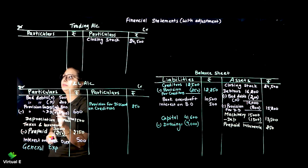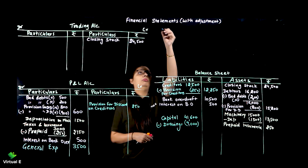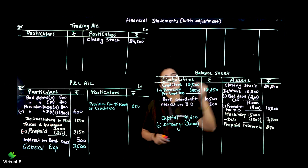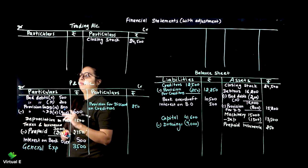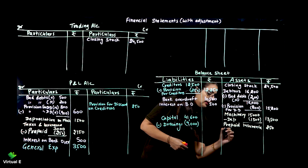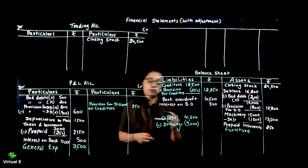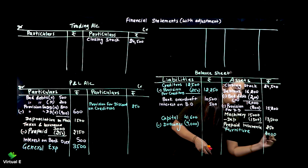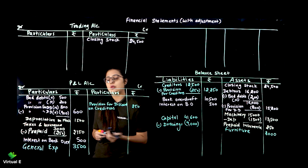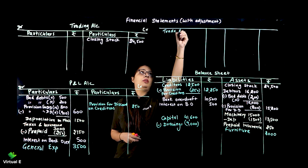General expenses are 3,500 - they go to profit and loss. Then we have machinery - already transferred. Furniture not yet transferred - furniture is our asset. You should know where each item goes; practice will tell you. After furniture, creditors already done. Trade expenses go to profit and loss account.